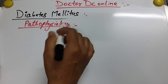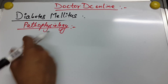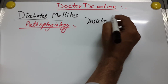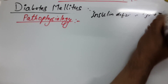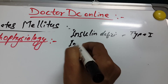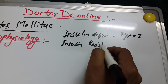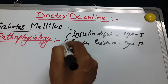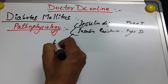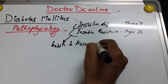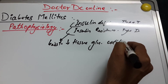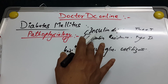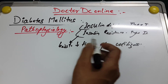Now, pathophysiology of diabetes mellitus — how does diabetes mellitus occur. In type 1 diabetes mellitus there is insulin deficiency, and in type 2 there is insulin resistance or decreased insulin sensitivity. These two conditions lead to decreased tissue glucose utilization. In type 1, there is complete destruction of beta cells, so no production of insulin, whereas in type 2 there is resistance or decreased insulin sensitivity.